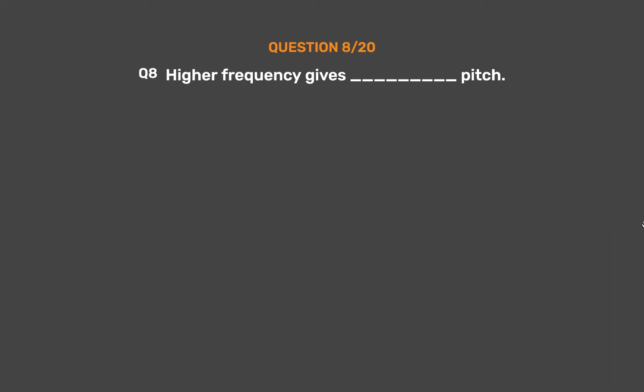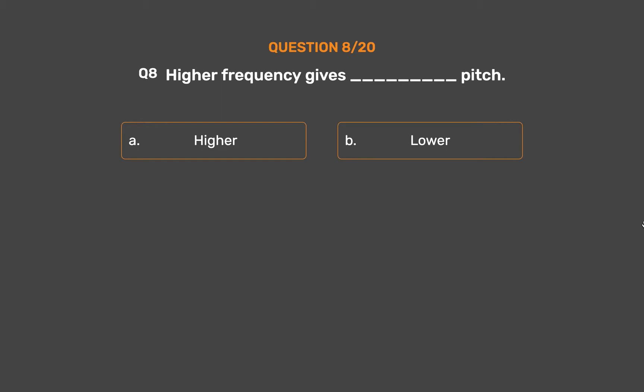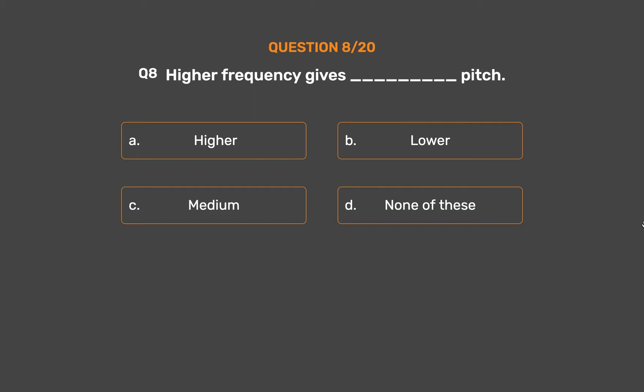Question number 8. Higher frequency gives underscore pitch. Option A, Higher; Option B, Lower; Option C, Medium; Option D, None of these.